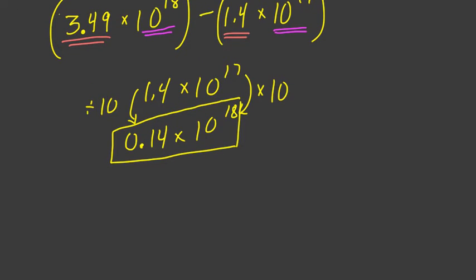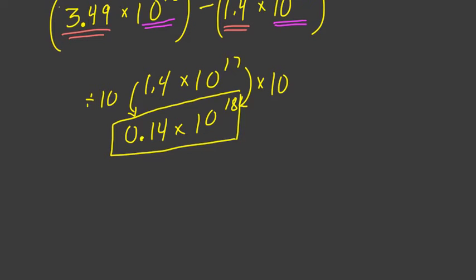So here, it might be easier to stack this up. So we've got 3.49 times 10 to the 18th, and we're subtracting 0.14 times 10 to the 18th. Now we leave the 10 to the 18th alone, because this is in terms of that power, right? 10 to the 18th stays there. And here, we subtract directly.